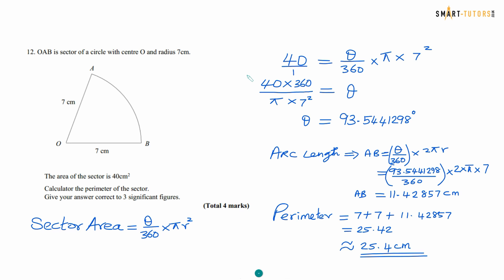So sector area equal theta over 360 times pi r squared. So 40 over 1 equal theta over 360 times pi 7 squared. So you rearrange the formula, make the theta as a subject. So the theta is the angle between the two radii. And once you find out the theta, arc length is going to be the theta over 360 times 2 pi r. So whatever you find the answer 93, keep that in the calculator. Then press the answer button, divide by 360 times 2 times pi times 7. That gives the arc length AB at that width 7 plus 7 because it's a perimeter. Finally, the answer is 25.4. That is the answer for question number 12.